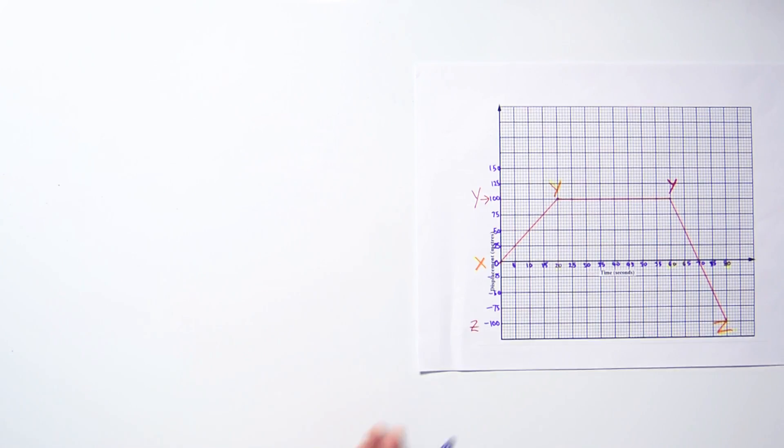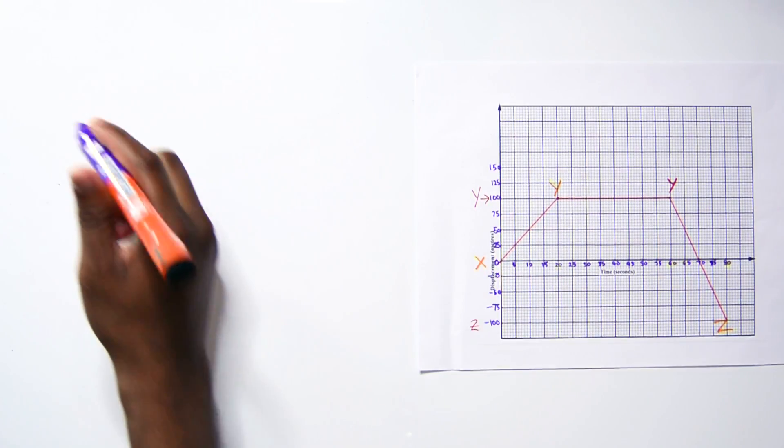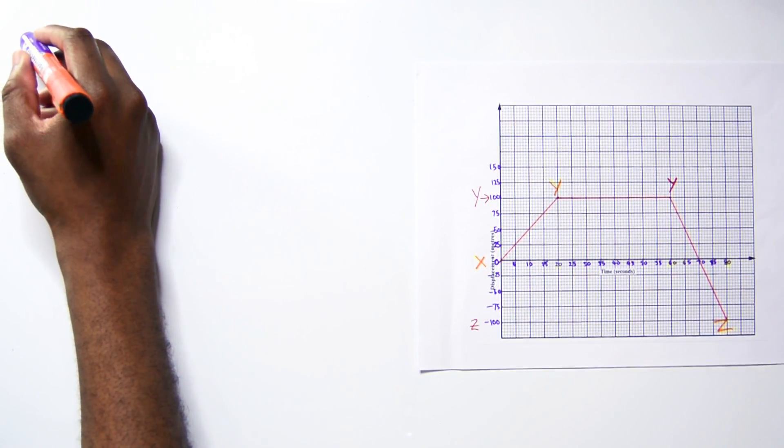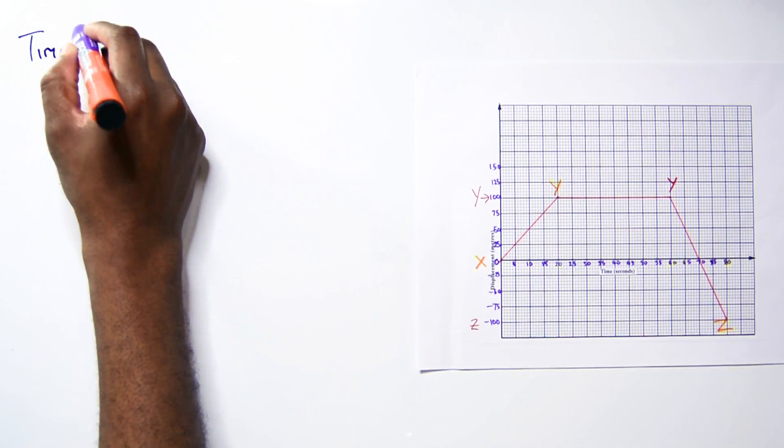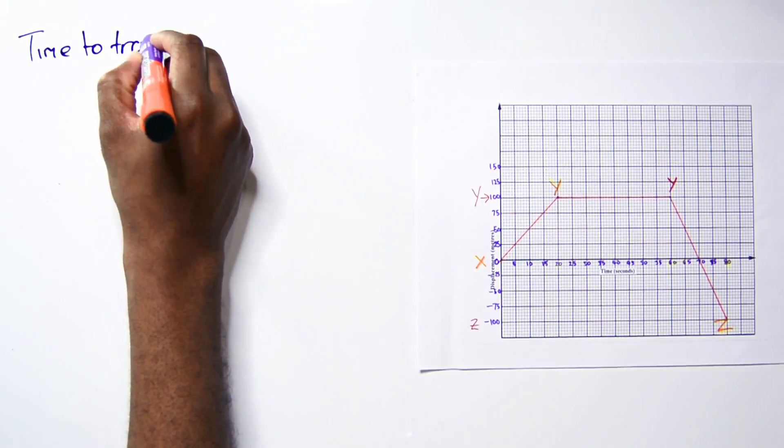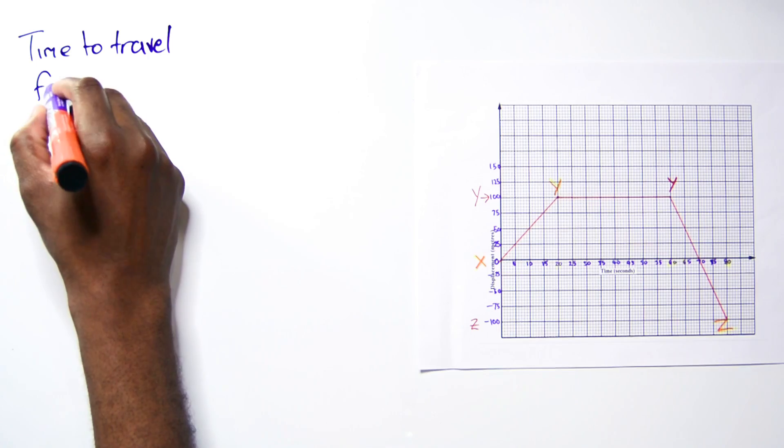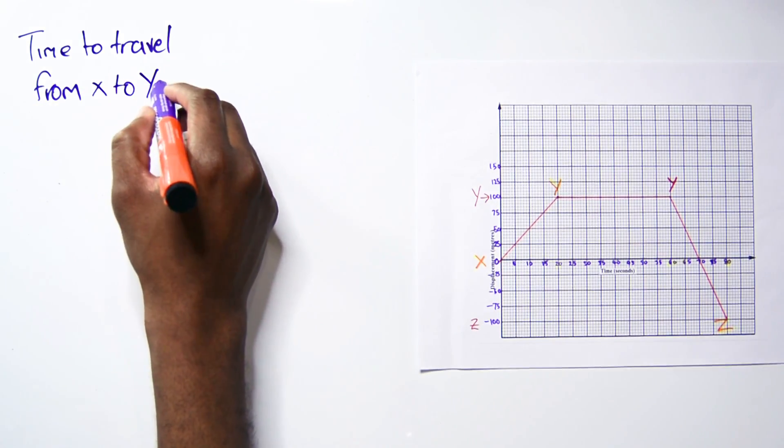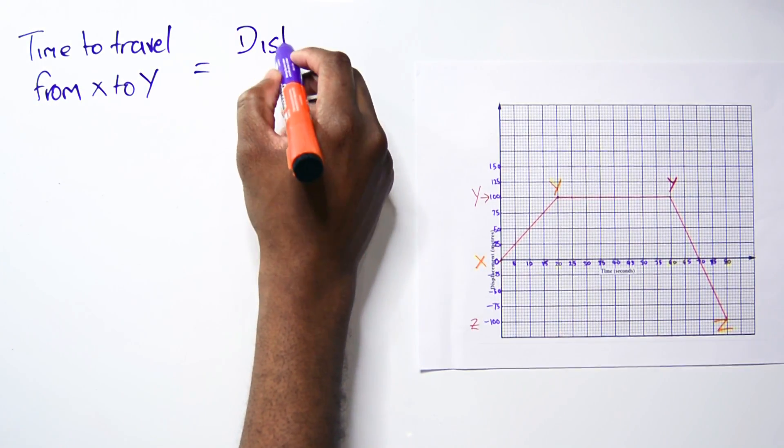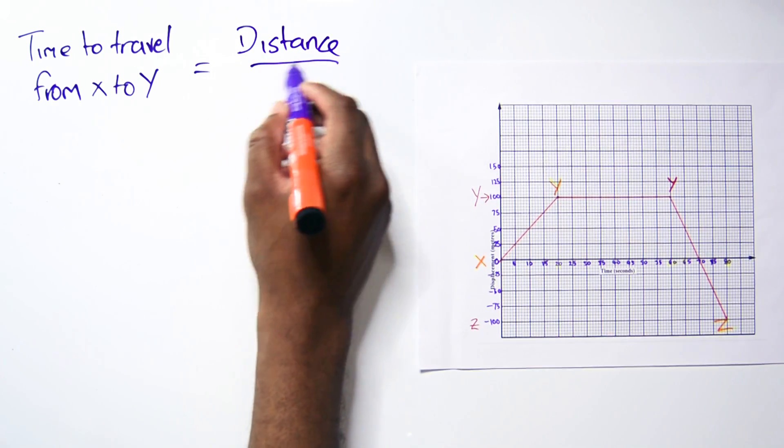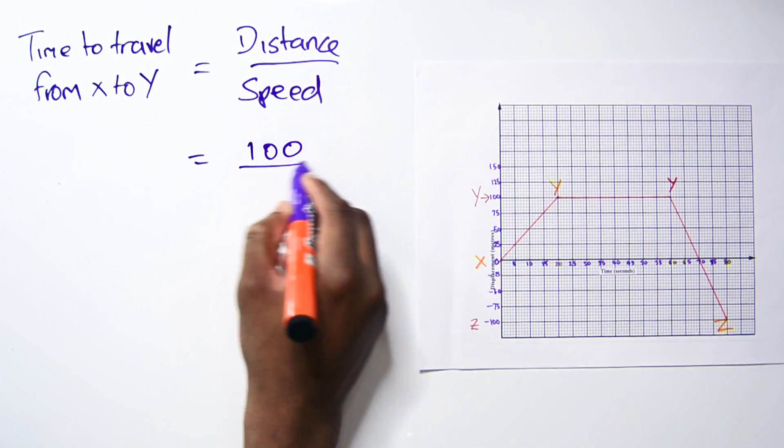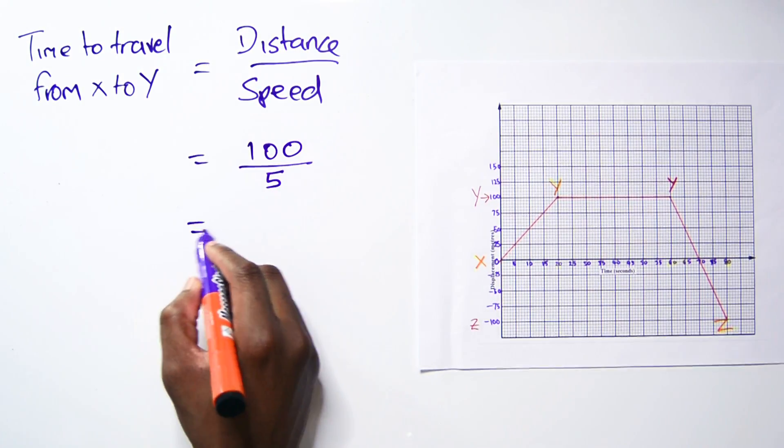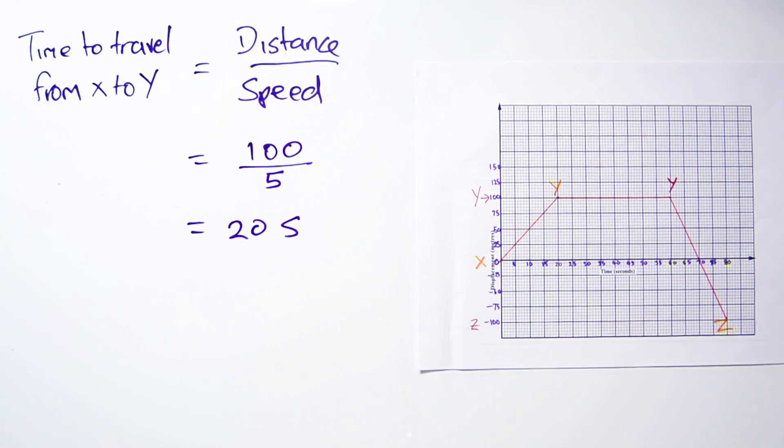To plot this graph effectively, we need to find the time to travel from X to Y. Using the formula time equals distance over speed, when we substitute our values we get 100 divided by 5, which equals 20 seconds.